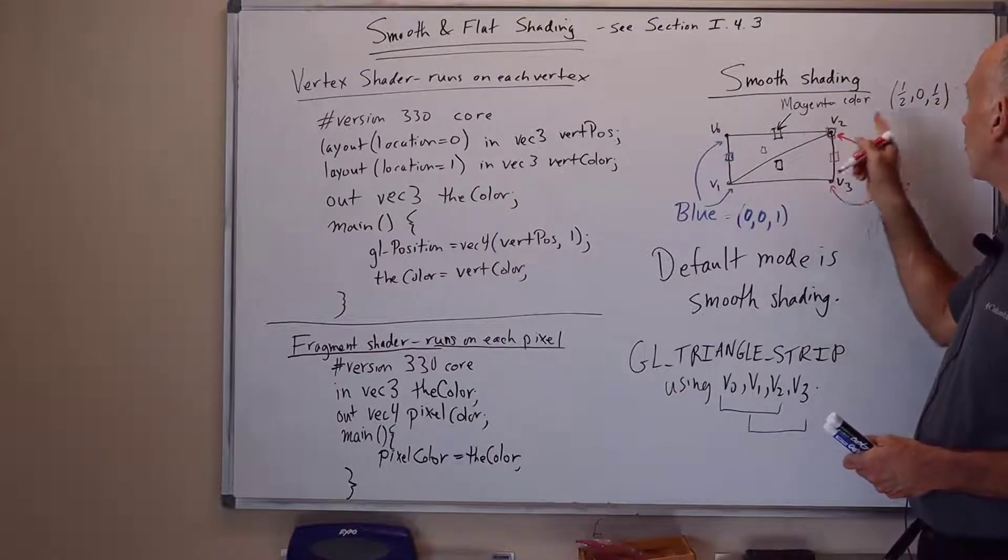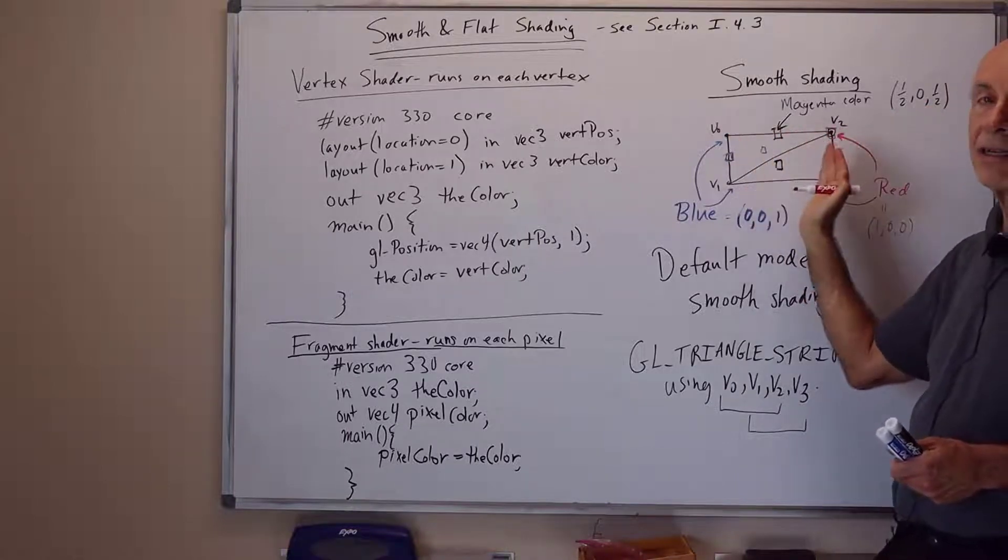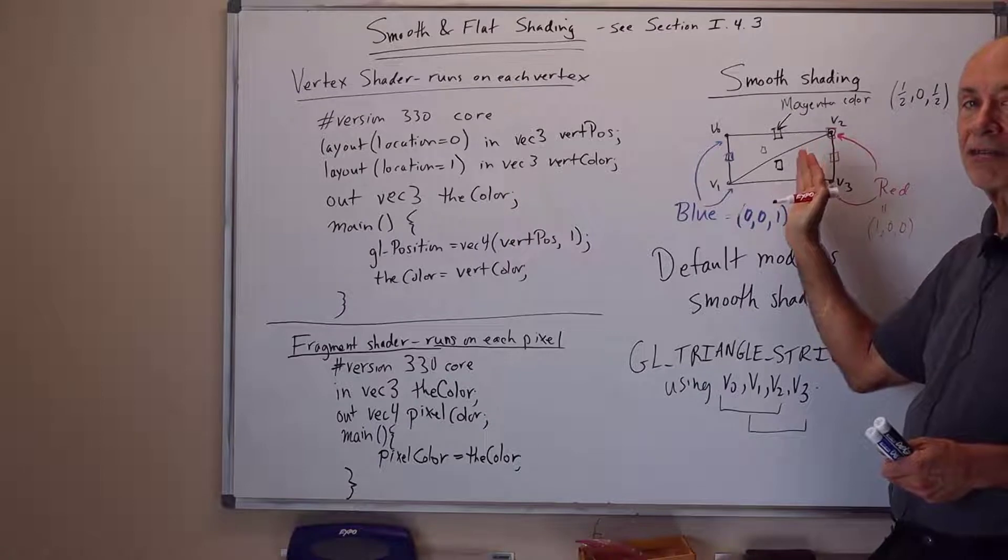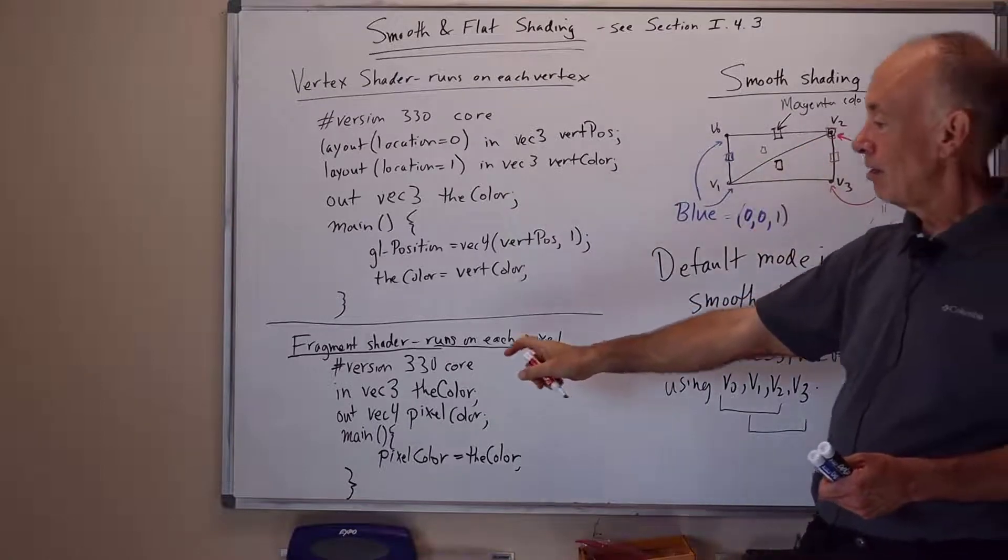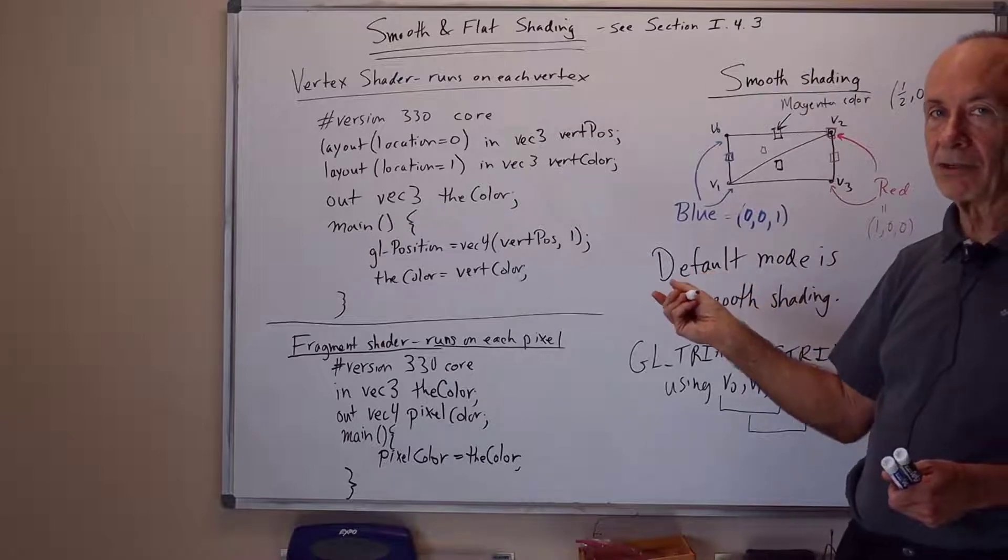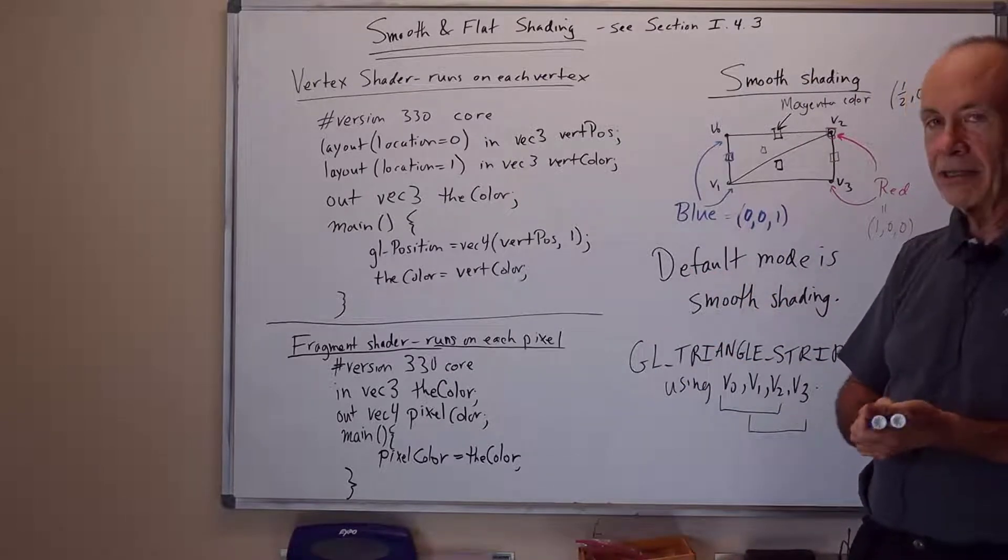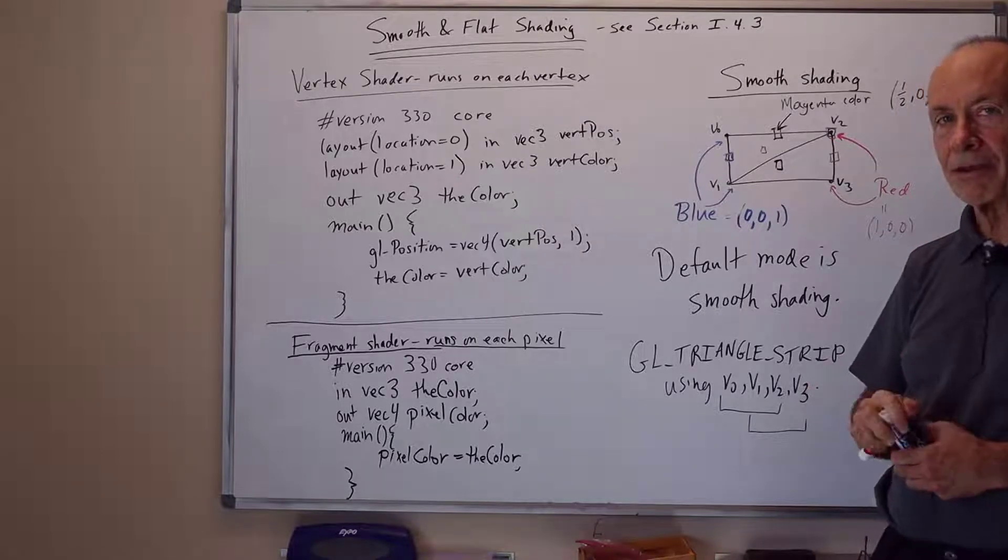And so the middle one colors the average of these things are one-half, zero, one-half. The color is very smoothly interpolated on the pixels throughout the triangle. The way this works is that when the fragment shader is run on a pixel, it gets the appropriate smoothed color. So this is the default rendering mode. Next I want to talk about flat shading.